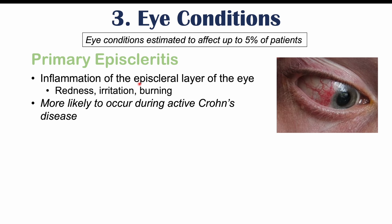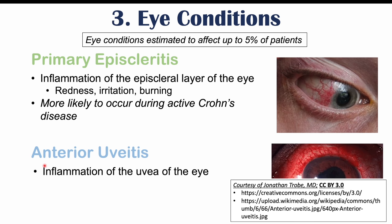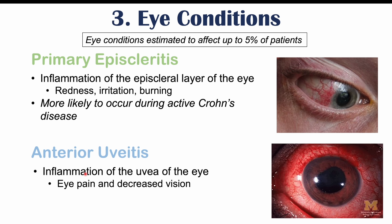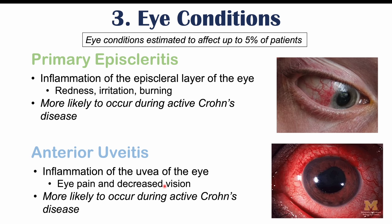Anterior uveitis can also occur in Crohn's disease — it is inflammation of the uvea of the eye causing eye pain and decreased vision. An important distinction: primary episcleritis causes redness, irritation, and burning, whereas anterior uveitis causes eye pain and decreased vision. Anterior uveitis is very important to recognize, and like episcleritis, it is more likely to occur during active Crohn's disease.